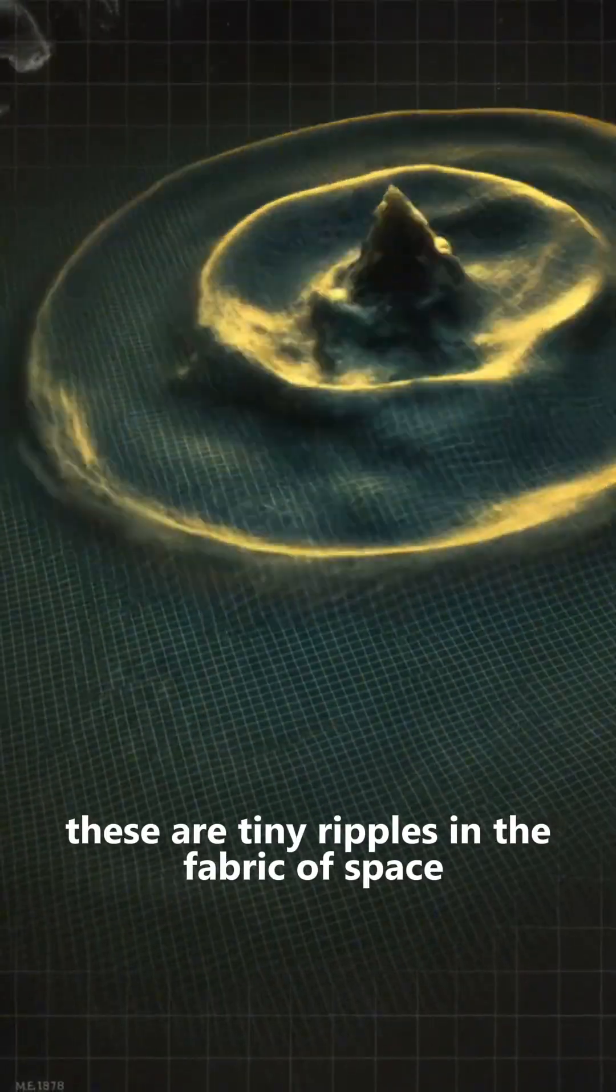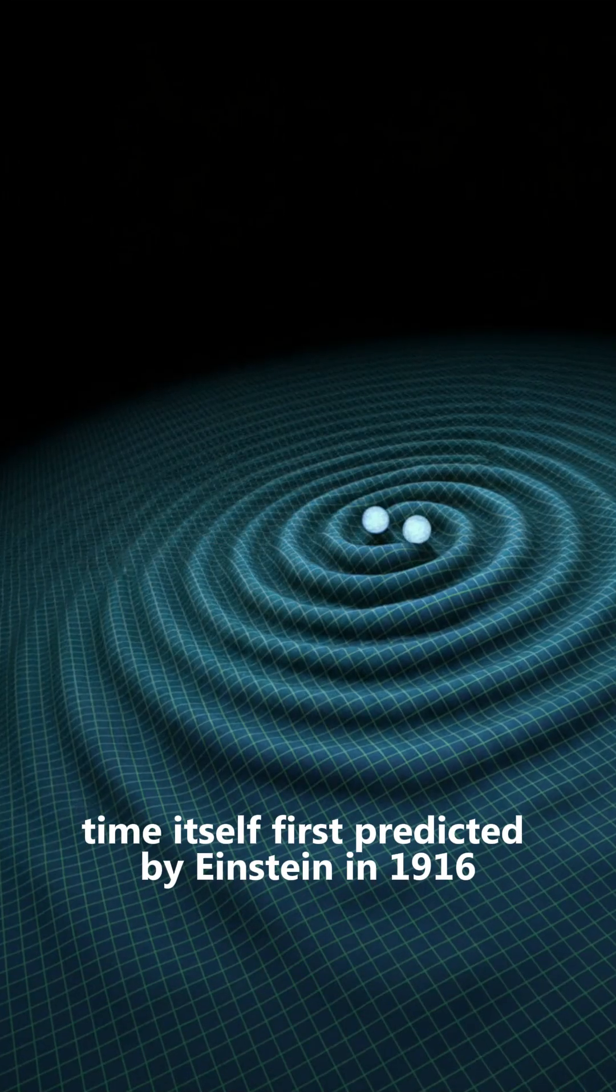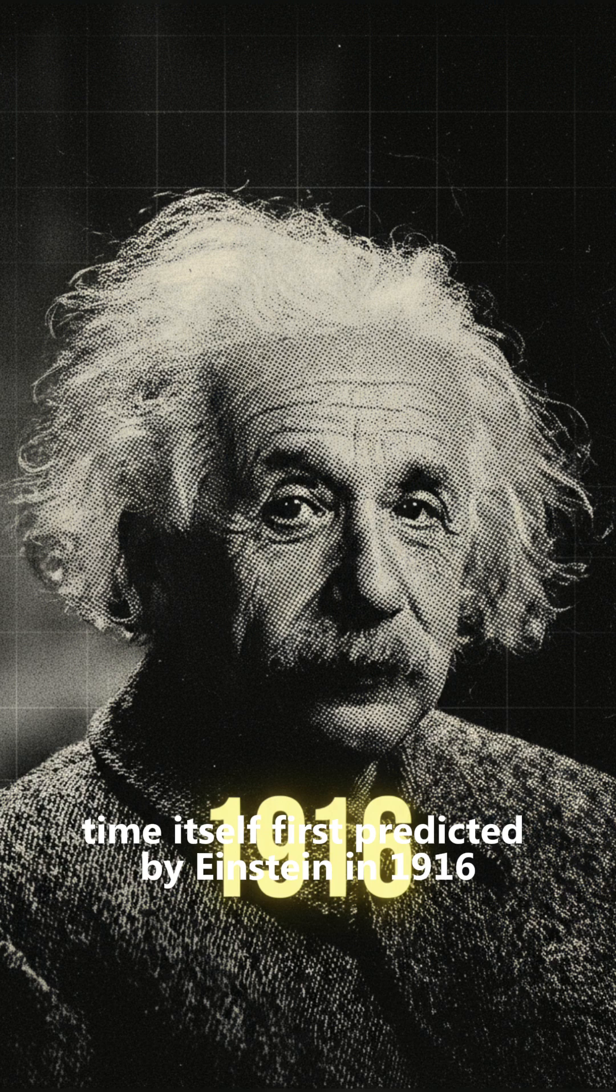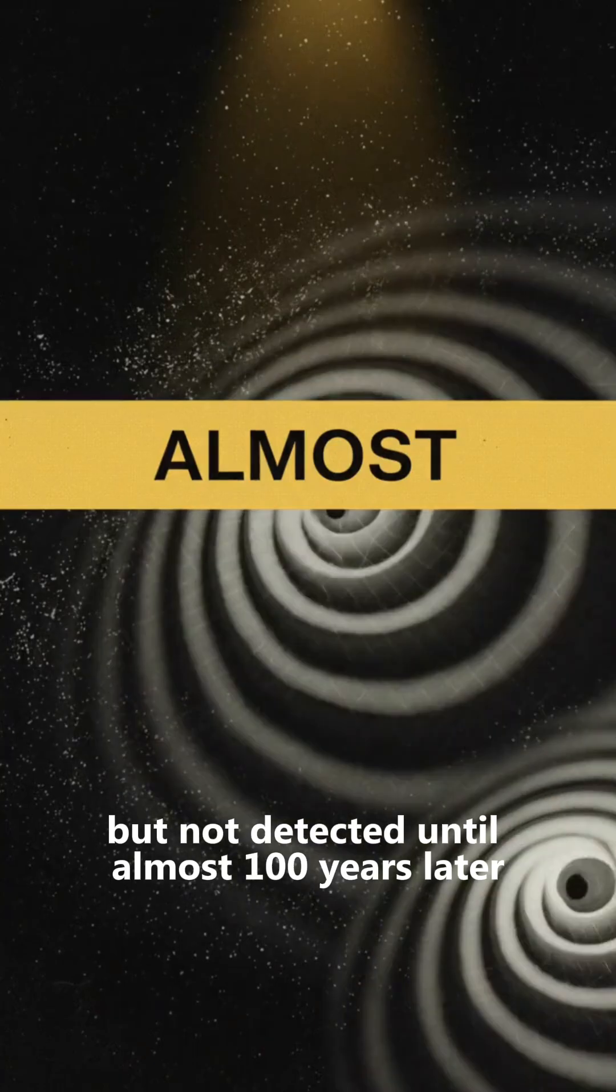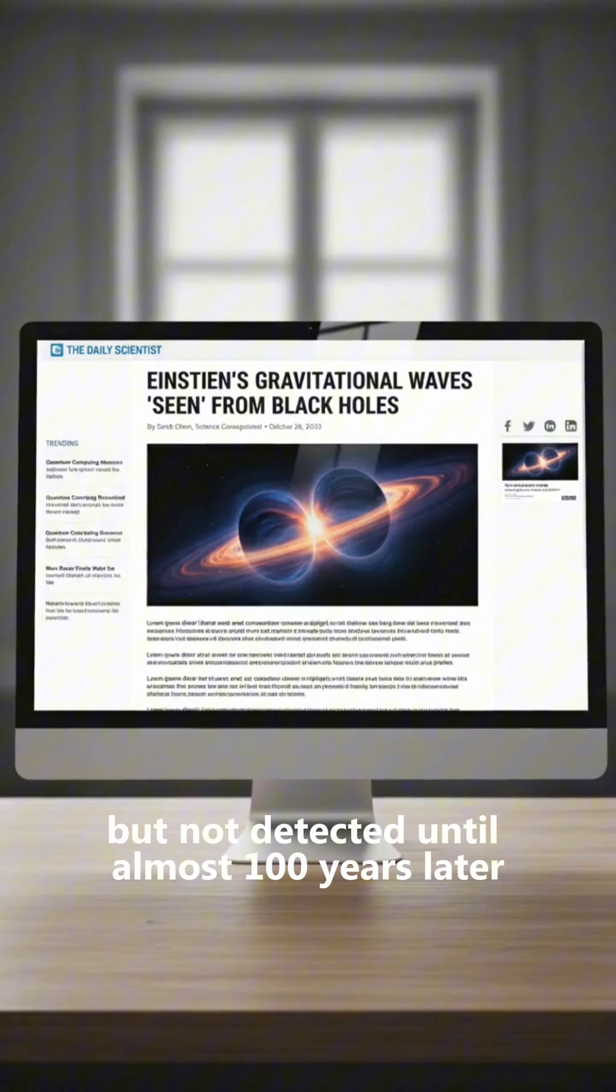These are tiny ripples in the fabric of space-time itself, first predicted by Einstein in 1916, but not detected until almost a hundred years later.